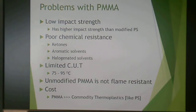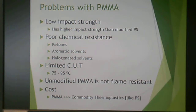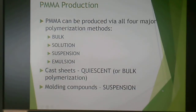The problems come up when looking at impact strength. It still has higher impact strength than modified polystyrene, but it can still shatter. It also has poor chemical resistance to ketones, aromatic solvents, and halogenated solids, and a limited critical use temperature of 75 to 95°C. Unless modified, it is not flame resistant, though it is slow to burn. This is a quasi-commodity thermoplastic — it costs quite a bit more than polystyrene, which also has nice clear optical properties. The only reason you would choose PMMA for optical properties over polystyrene is for exterior applications.